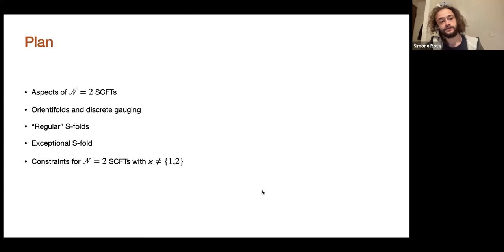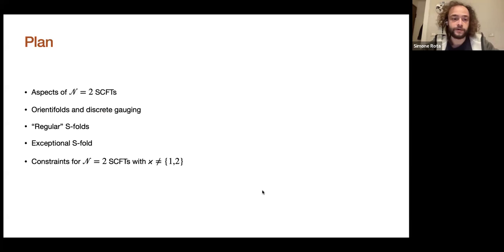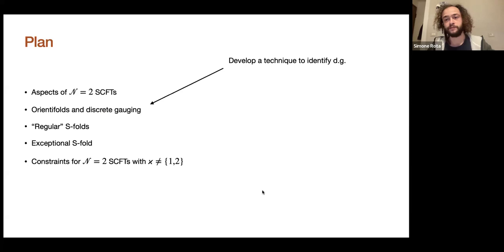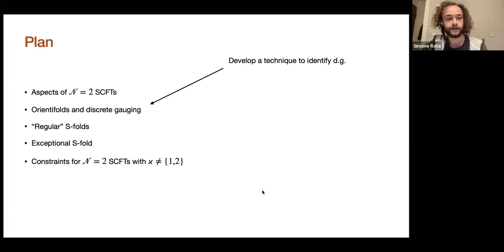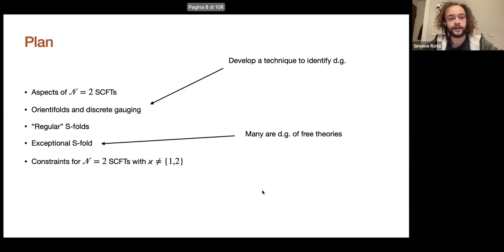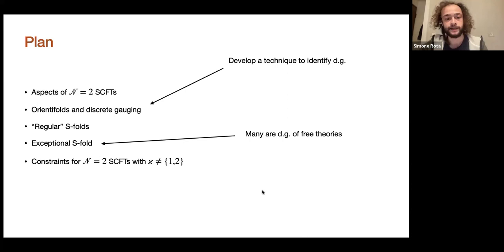We will find that some of these SCFTs, which are defined from geometric engineering, actually turn out to be discrete gauging of free theories — so they have trivial dynamics. Then we will build a more general constraint for a wider class of SCFTs, which are a particular class of N=2 SCFTs characterized by a value of an invariant called the characteristic dimension.